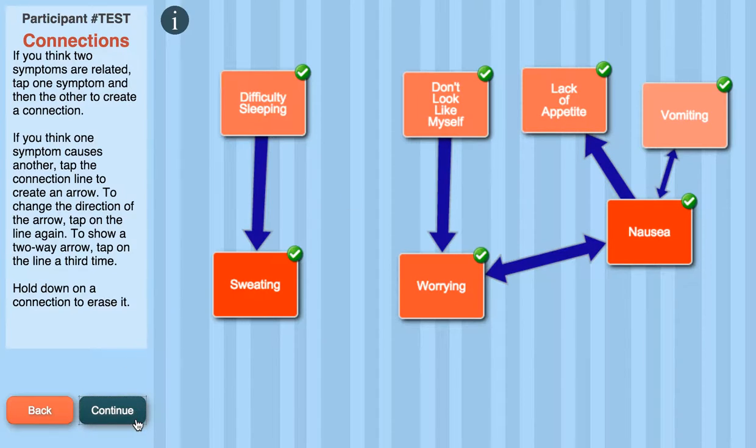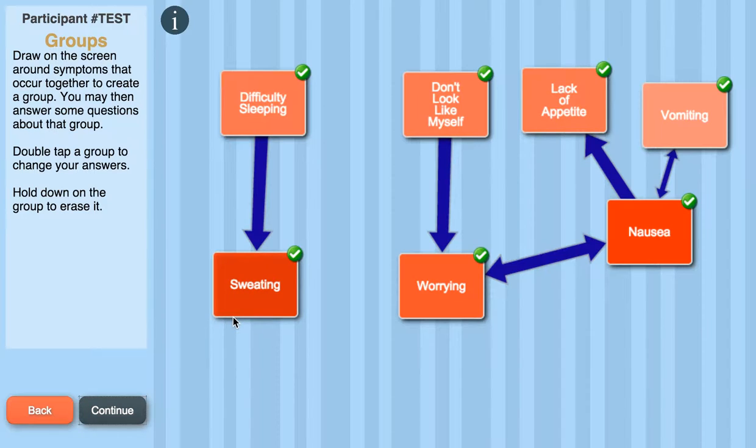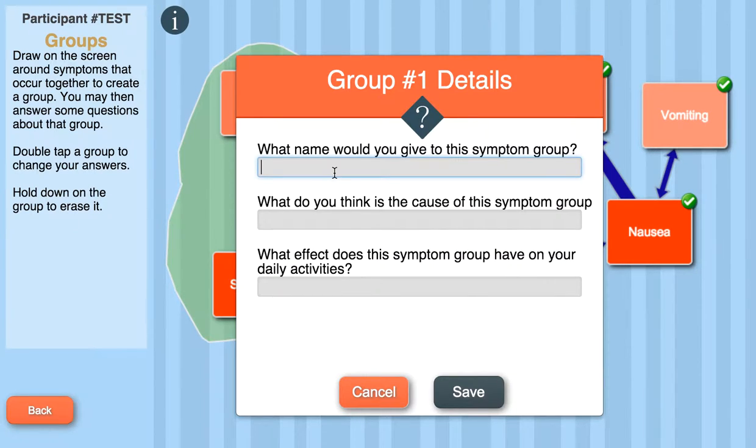Once you're finished, click Continue to go on to the Groups section. Here, you can group any symptoms together by tracing a line around the symptoms. And you can give a name to that group. So, for instance, with this group, I'll give it the name Loss of Sleep, because they are related to my sleep.